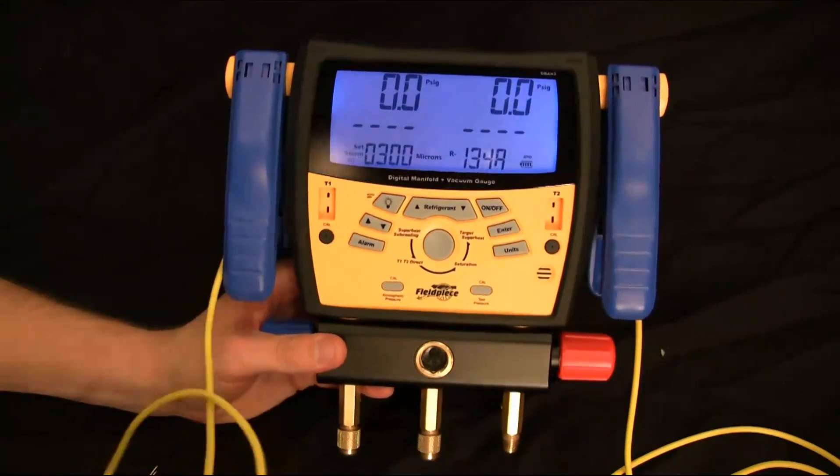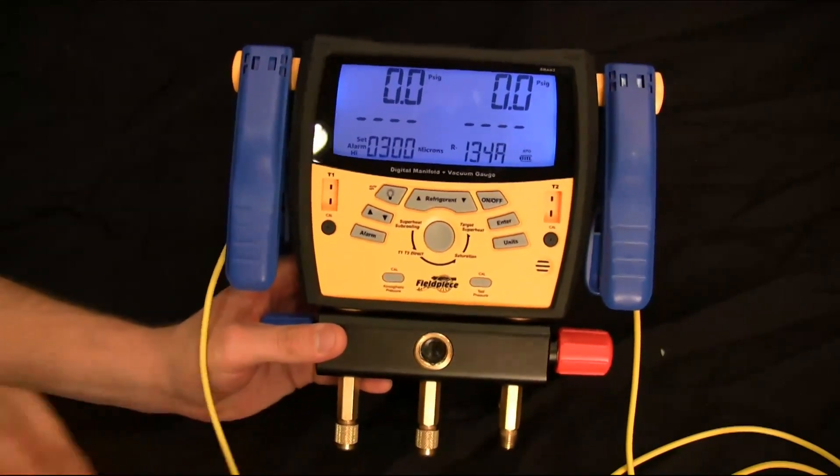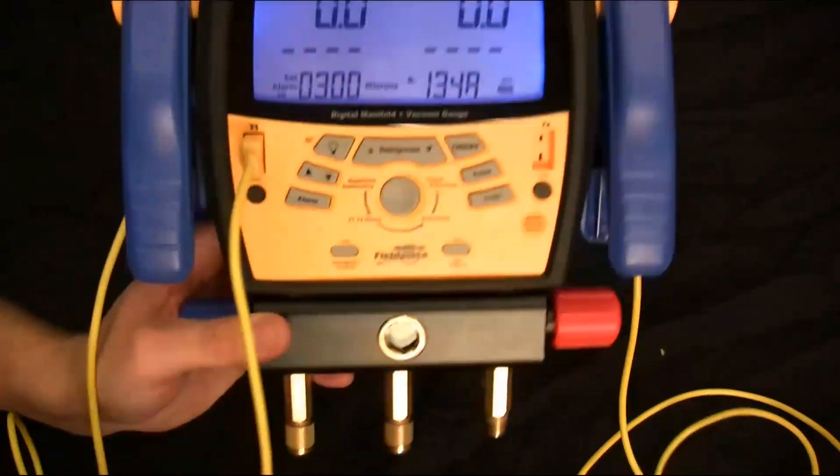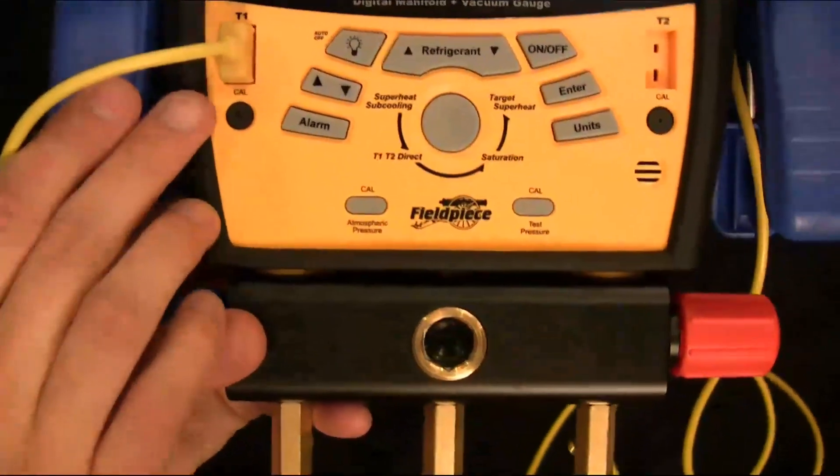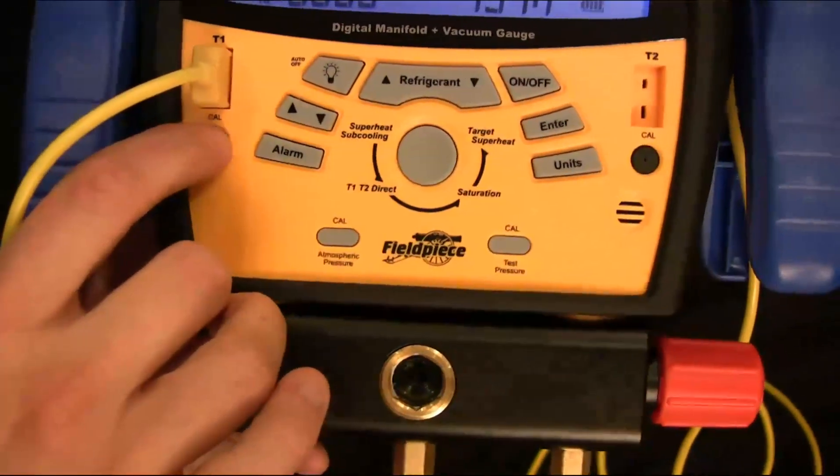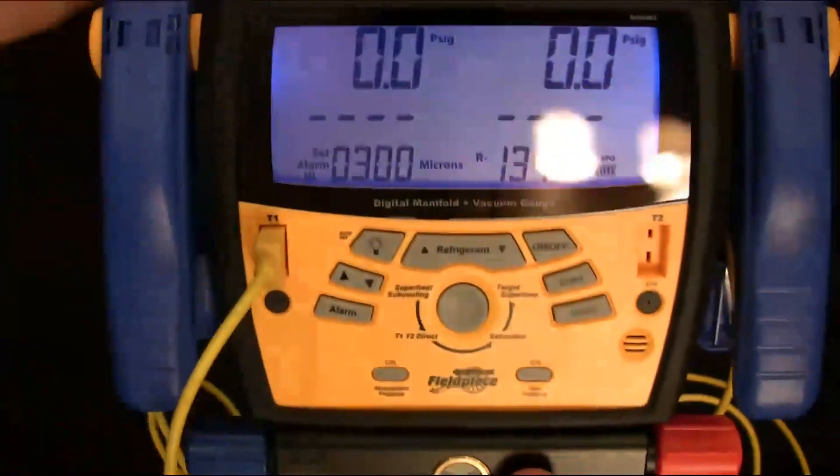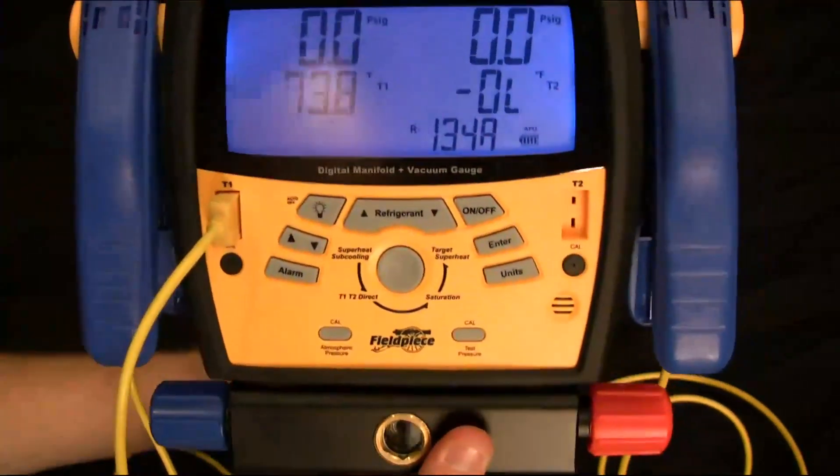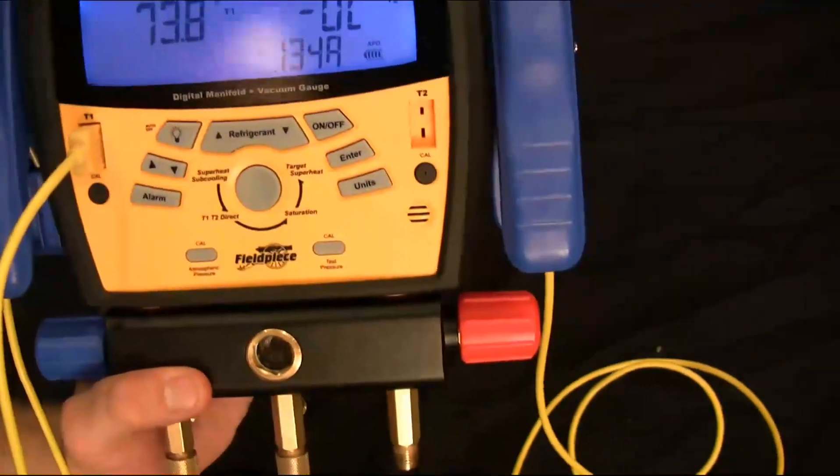Now to calibrate the thermocouples, we have two calibration pots, one for each. What you want to do is just typically do it to ice water or to a known temperature that's already calibrated, but just twist the cal pots and that will adjust the temperature. And you should do that in T1, T2 direct mode. And that's how to calibrate it.